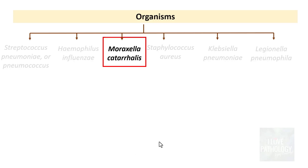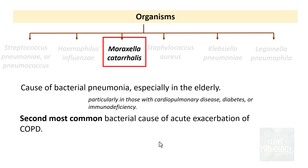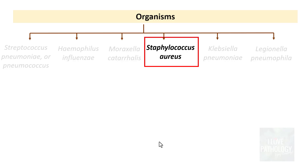The third organism is Moraxella catarrhalis, which causes bacterial pneumonia especially in the elderly, particularly those with cardiopulmonary diseases, diabetes mellitus, or immunodeficiencies. After Haemophilus influenzae, this is the second most common bacterial cause of acute exacerbations of chronic obstructive pulmonary disease.